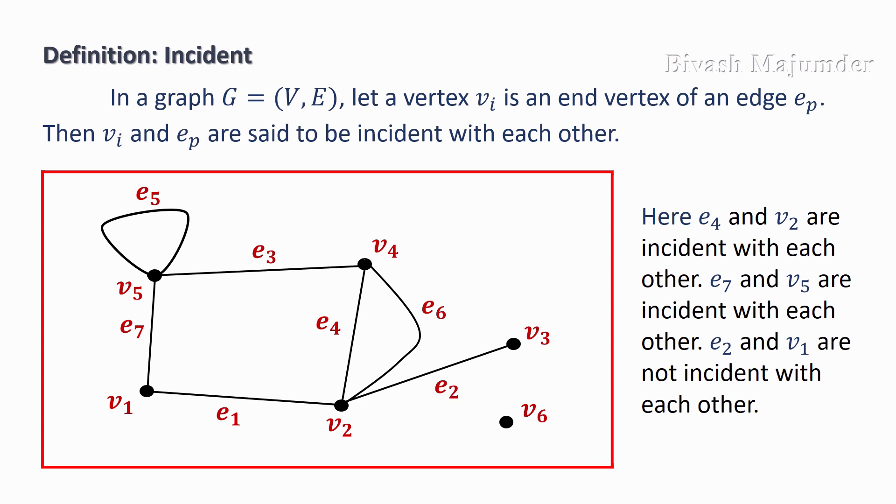In this picture, e4 and v2 are incident with each other. e7 and v5 are incident with each other. e2 and v1 are not incident with each other.